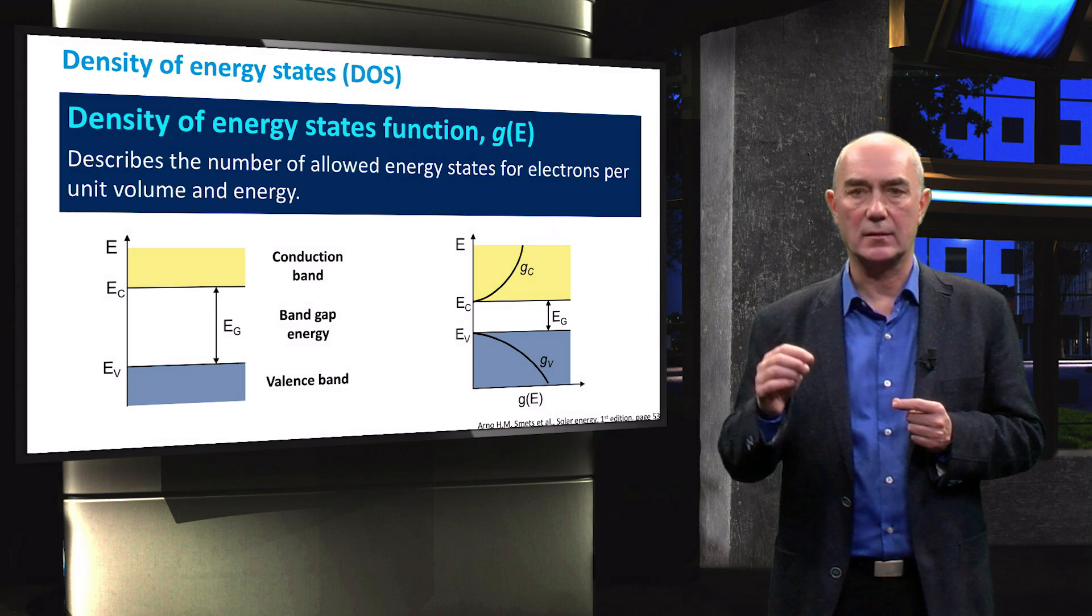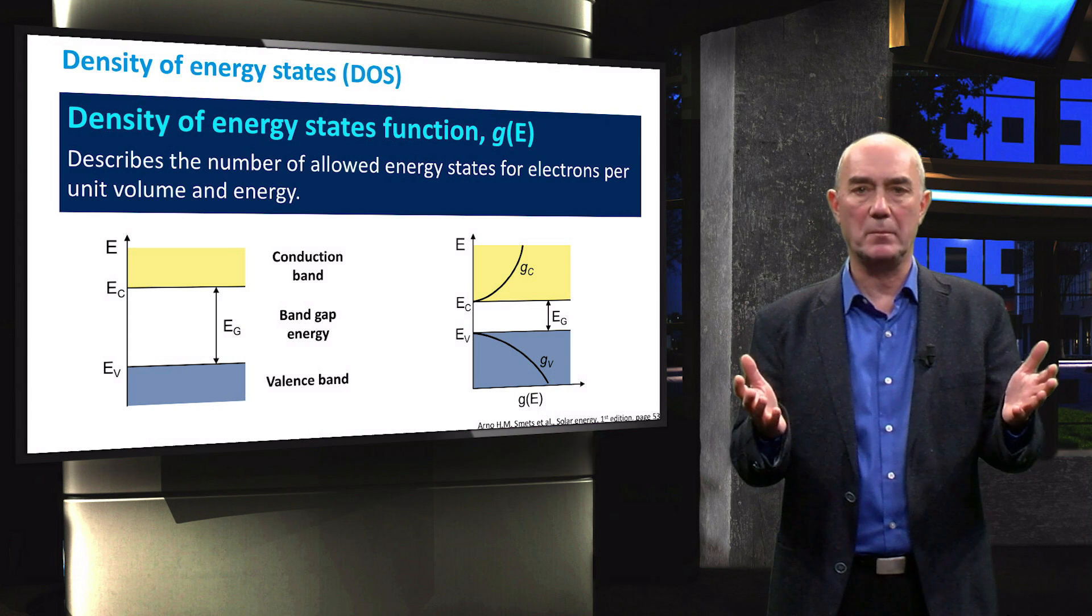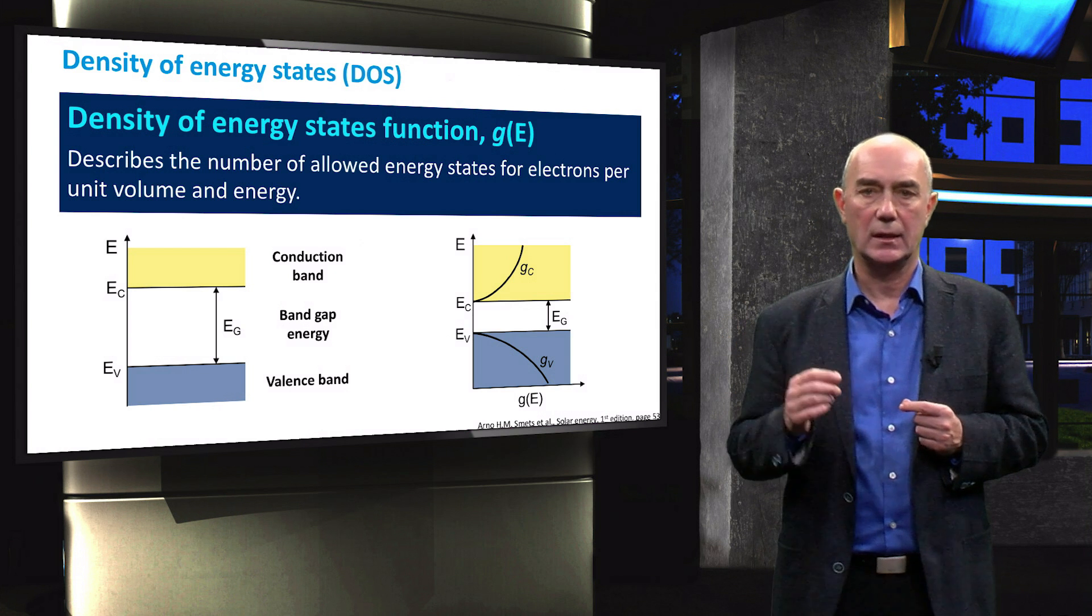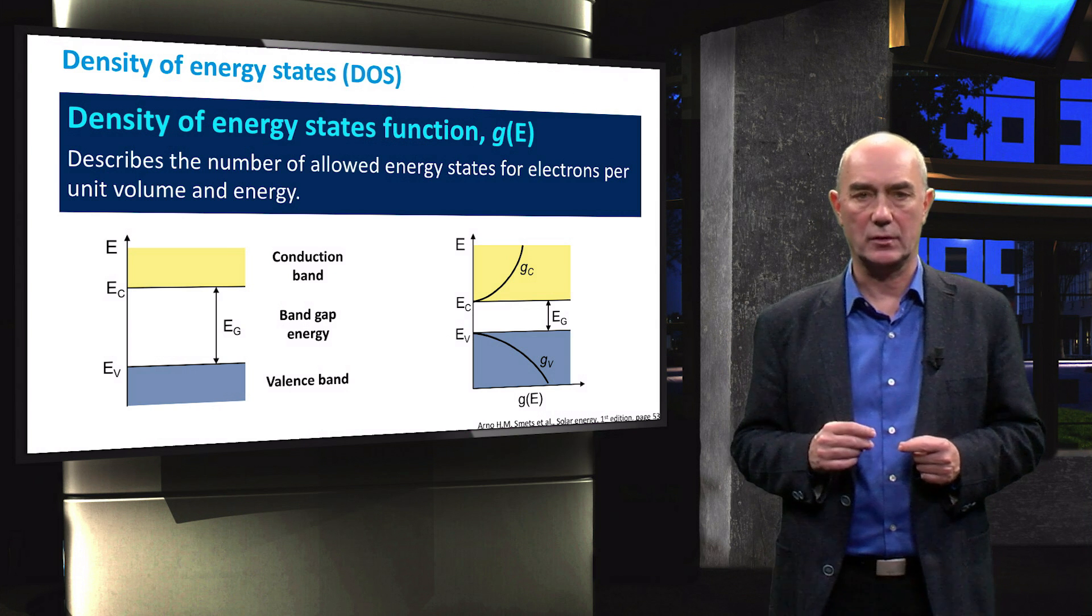gc represents the density of states in the conduction band. If you remember from the previous video, the conduction band represents energy states of mobile electrons.